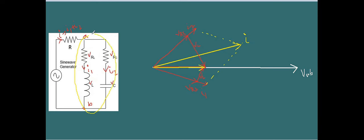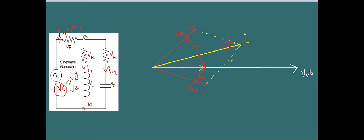The total supply voltage VS is equal to VR plus VAB. VR lies in the line of I because it's purely resistive, so there is no phase difference between VR and I. This is VR. Adding VR to VAB gives us the resultant supply voltage VS. Hope you got that. Thanks for watching.